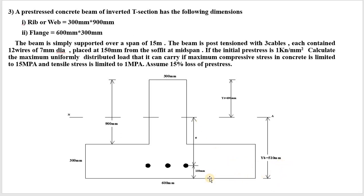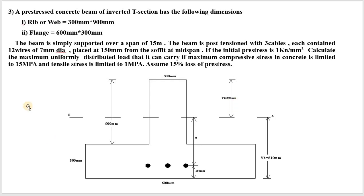Since we measured from the bottom, the value 510 mm is YB — the distance of the neutral axis from the bottom. YT = total depth − YB = (900 + 300) − 510 = 690 mm. So the neutral axis is at 690 mm from the top.